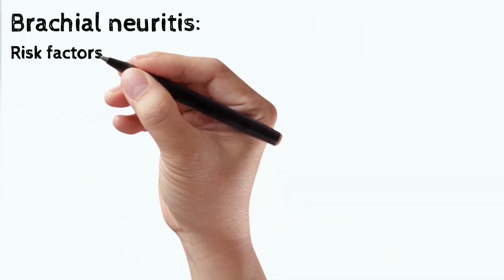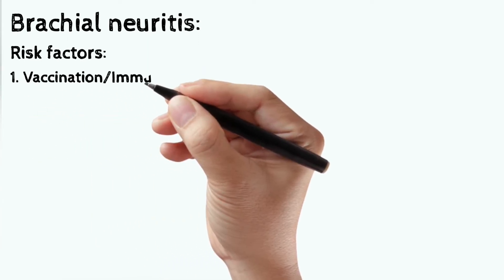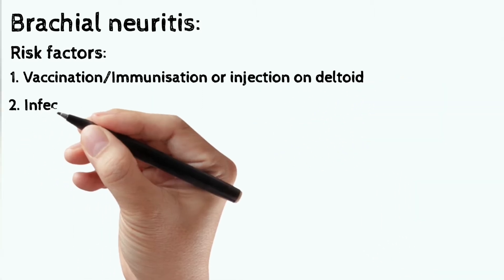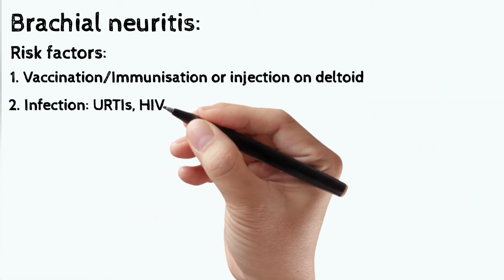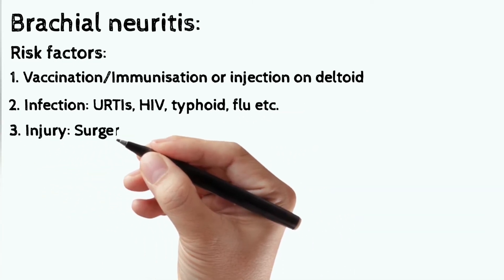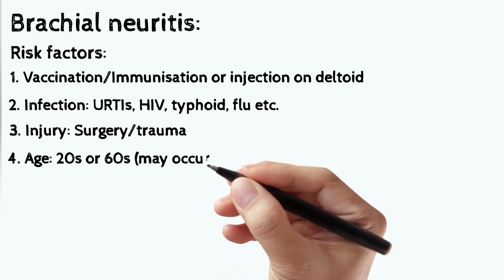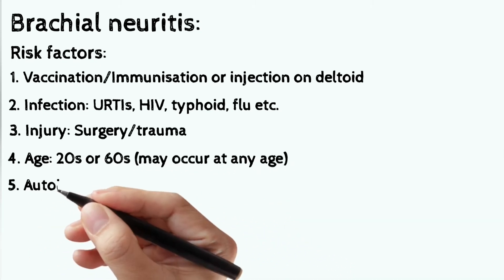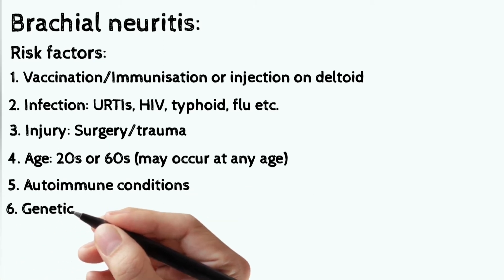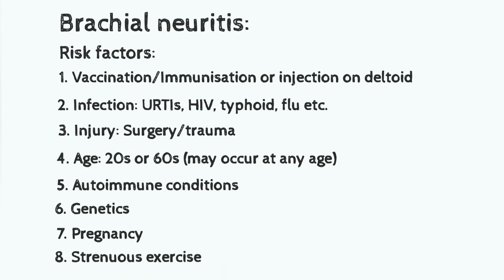Now, brachial neuritis. Risk factors include vaccination or immunization, infection, or injection on the deltoid. Infections like upper respiratory tract infection, HIV, typhoid, flu, etc. Injury such as surgery or trauma. Age groups most affected are 20s or 60s. Also autoimmune conditions, genetics, pregnancy, and strenuous exercise.